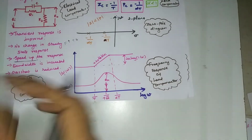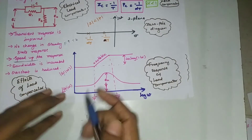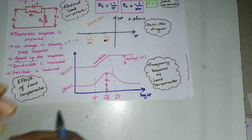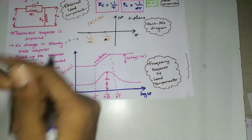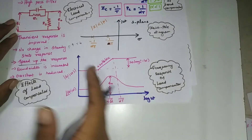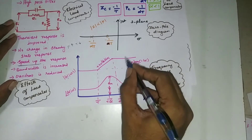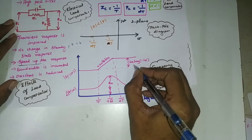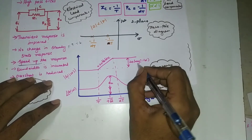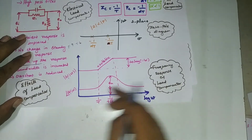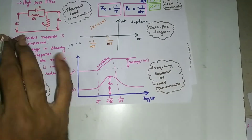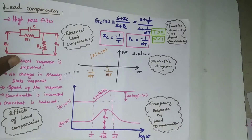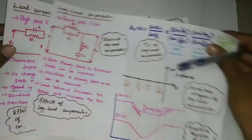This is the frequency response of the lead compensator — the magnitude plot and phase plot. This circuit will lead the phase. By seeing this frequency response you can understand it will add some phase — it increases the phase of the system. The amount of increased gain can be controlled using the formula 20 log(1/α). These are all the things related to lead compensators.